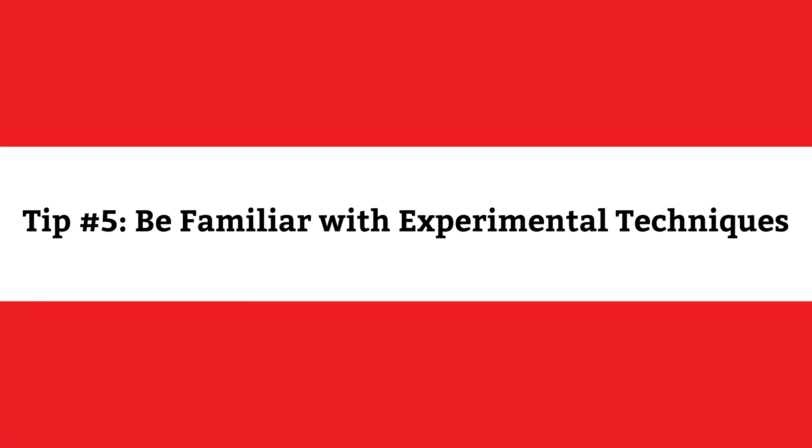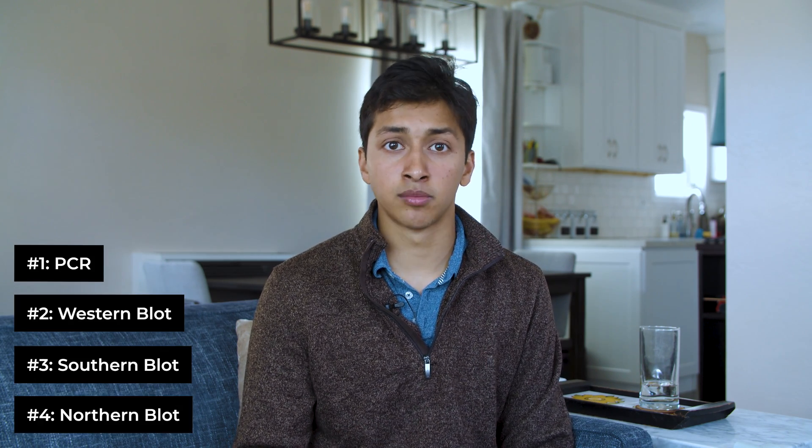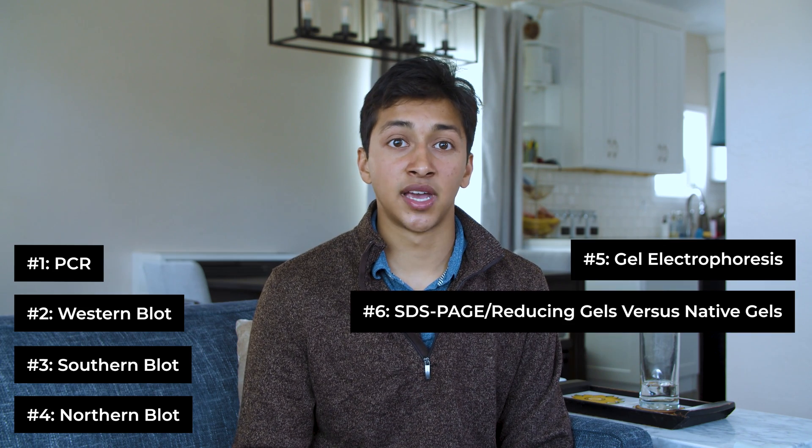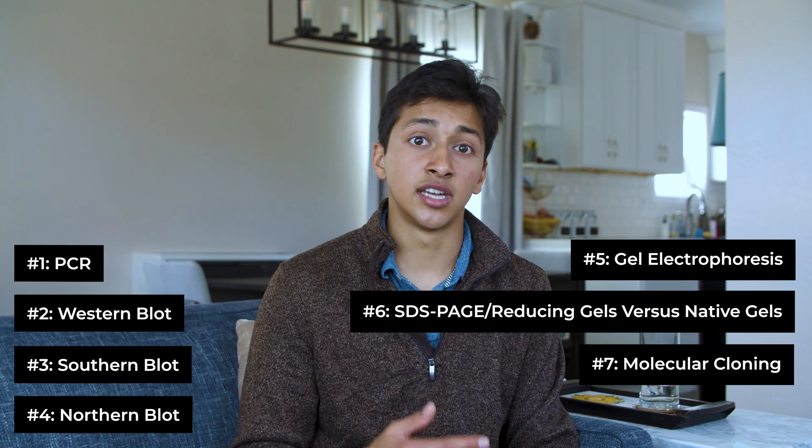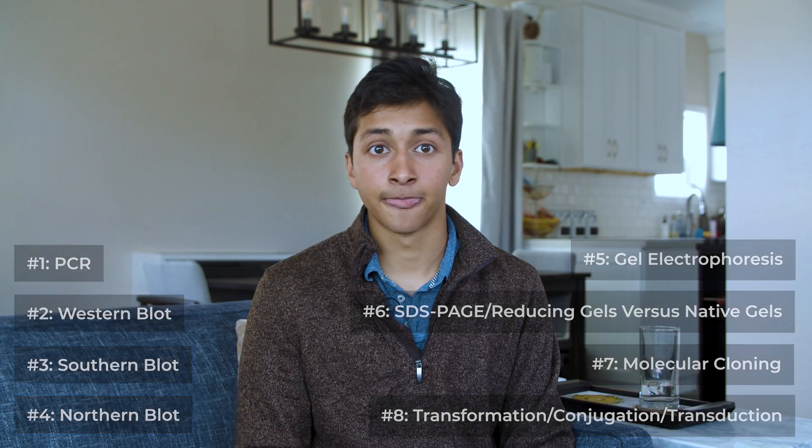Finally, MCAT biology biochemistry tip number five: Be familiar with experimental techniques. Experimental techniques on the MCAT biology biochemistry section include PCR, western blot, southern blot, northern blot, gel electrophoresis, SDS page and reducing gels versus native gels, molecular cloning, and transformation, conjugation, and transduction. You will encounter these techniques in biology biochemistry passages. And by applying strategies one and two, you'll be able to work your way through them. Here we'll go over what each technique does at a high level.